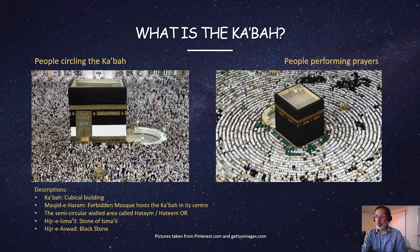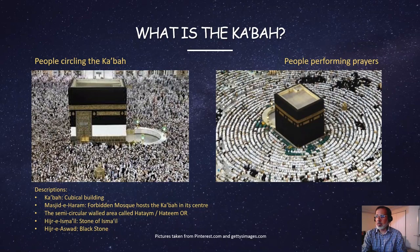No other mosque in the world has the Kaaba except the Forbidden Mosque. The Kaaba has a door. There are no windows or sunrooms. On the corner, closer to the door, is a special stone mounted called the Black Stone, Hijra-e-Aswad. It is a forbidden house, therefore no one lives in it. Next to the Kaaba, there is a semicircular wall. This area is called Hatim, or Hijra-e-Ismail, the Stone of Ismail, alayhi salam.